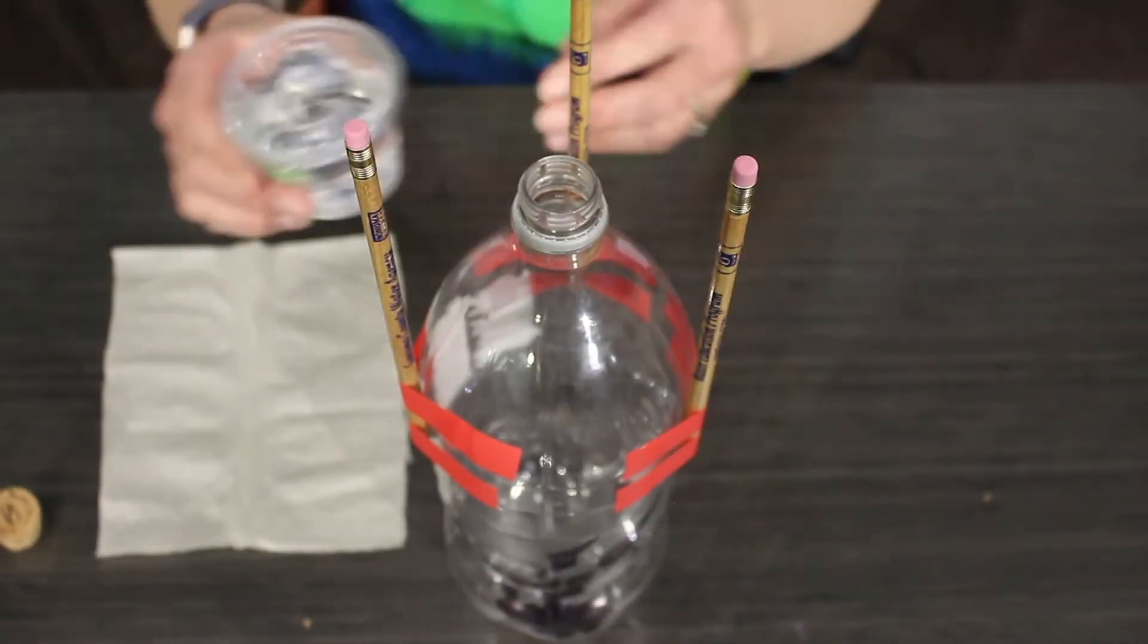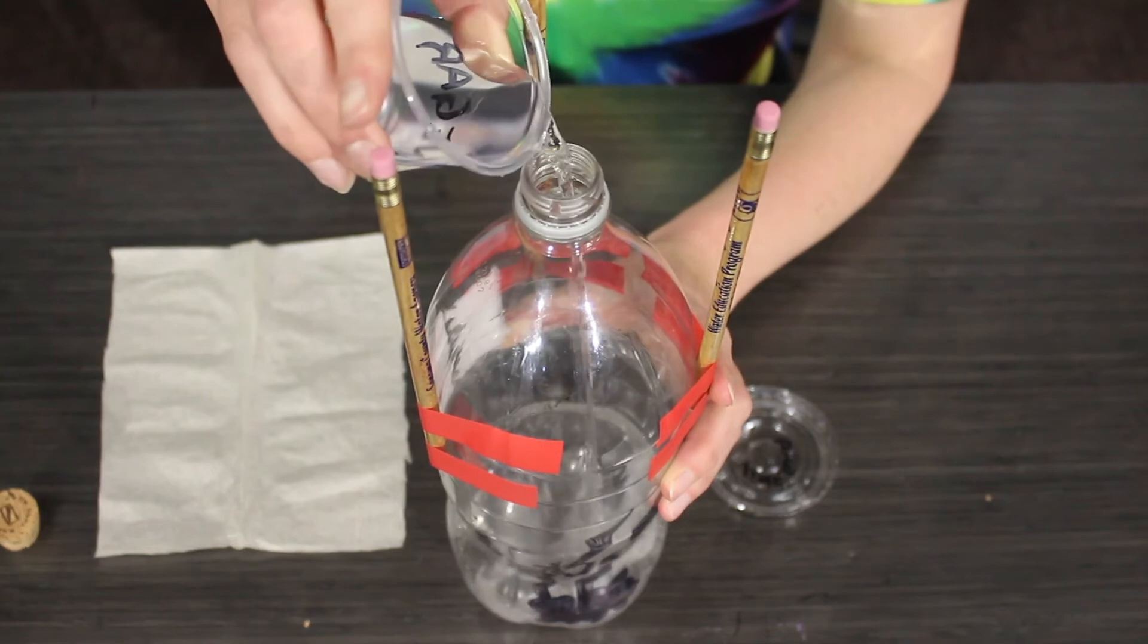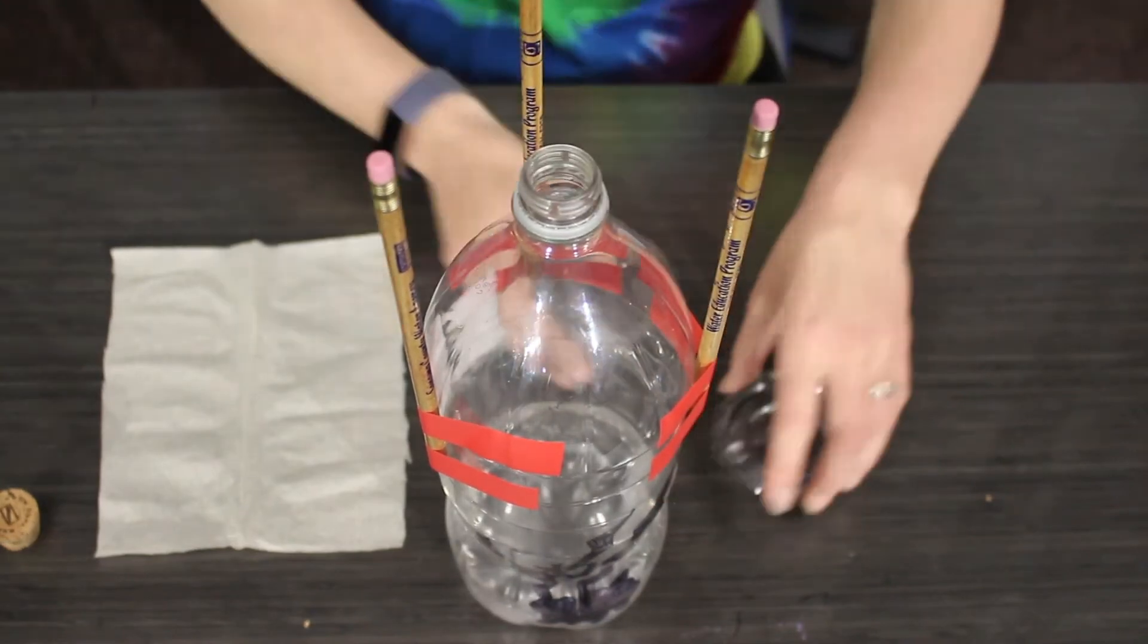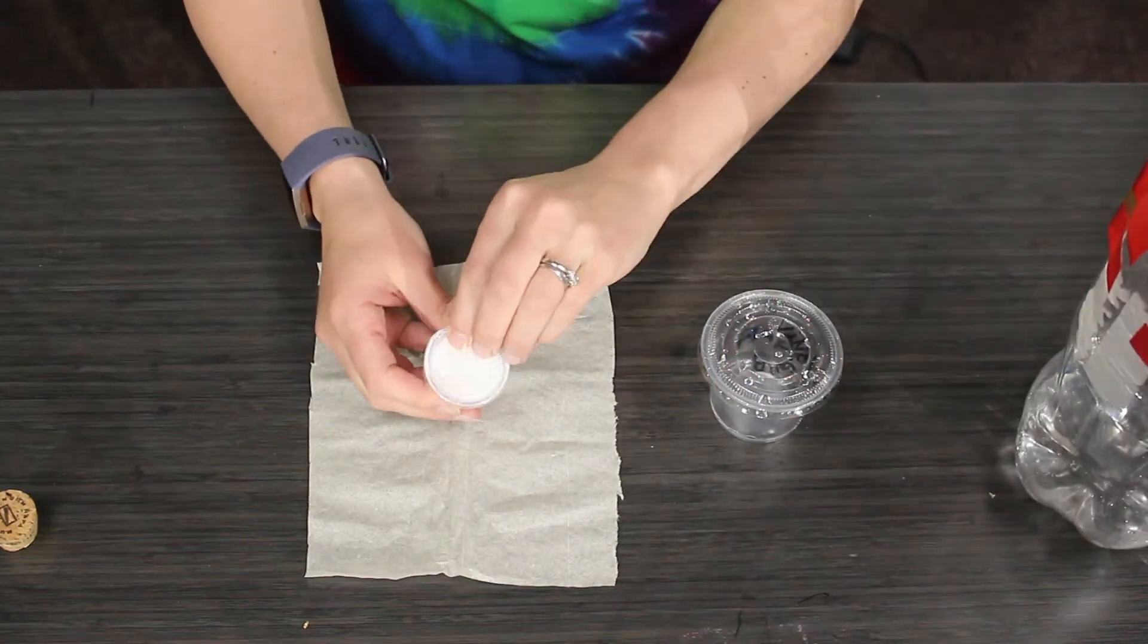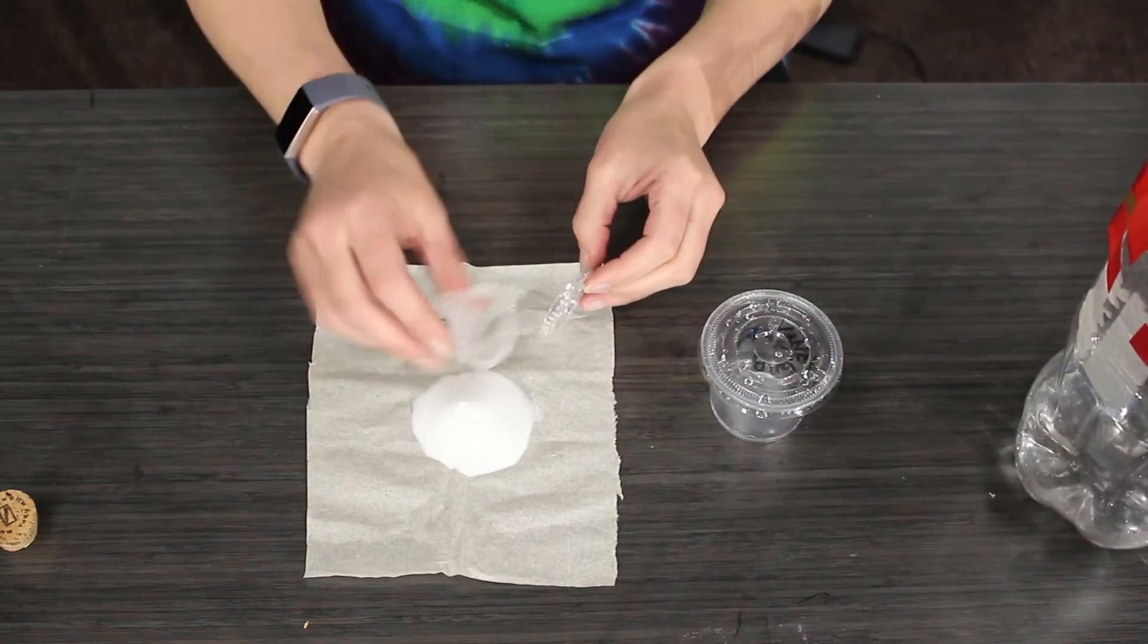Once you get the pencils taped onto the bottle, pour the five ounces of vinegar into the bottle rocket. You are then going to take the one ounce of baking soda and place it on your small paper towel square.